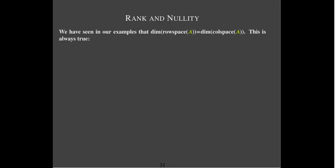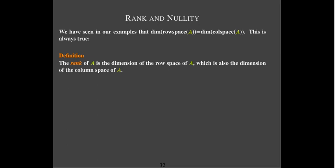In our example, the dimension of the row space was the same as the dimension of the column space, and that is always true. We call that number — the dimension of the row space and the dimension of the column space — the rank of A. The rank of A can be obtained from either the dimension of the row space or the dimension of the column space, because those are equal.